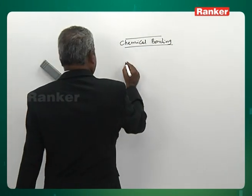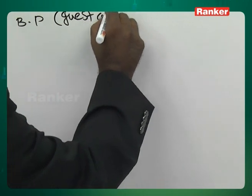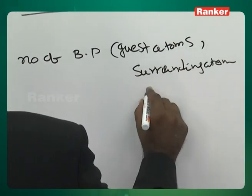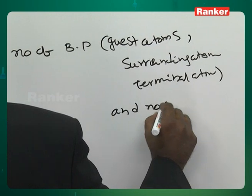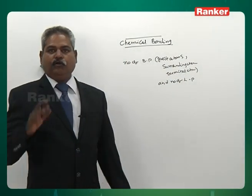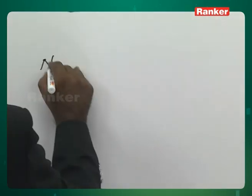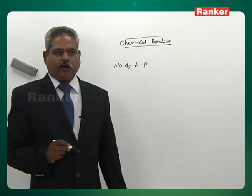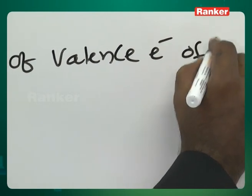Shape depends on the number of bond pairs (bonded/terminal atoms) and the number of lone pairs. Before finding shape, find the number of lone pairs — the number of electrons not used in bonding. Number of lone pairs = (valence electrons of central atom − electrons used in bonding) / 2.